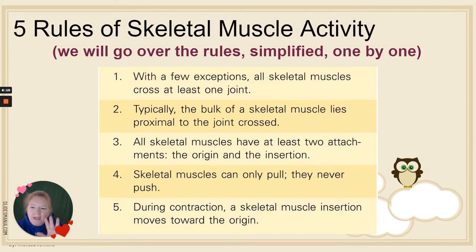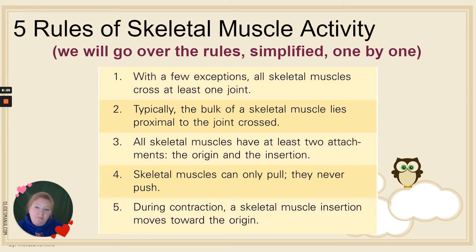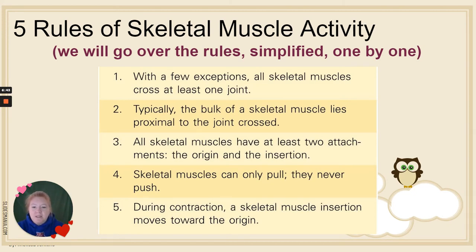There are five rules for skeletal muscle activity. Number one: with a few exceptions, all skeletal muscles cross at least one joint. Number two: typically the bulk of a skeletal muscle lies proximal to the joint crossed. Three: all skeletal muscles have at least two attachments — the origin and the insertion. Four: skeletal muscles can only pull, they never push. And five: during contraction, a skeletal muscle insertion moves toward the origin.